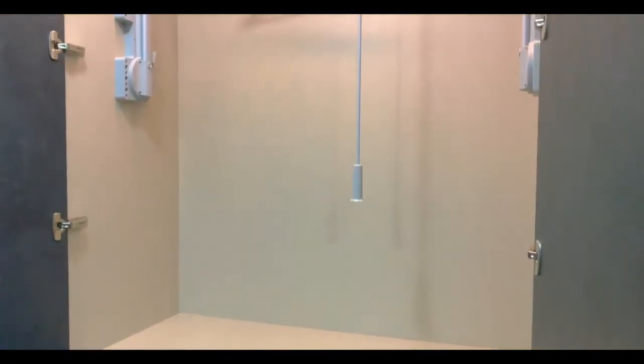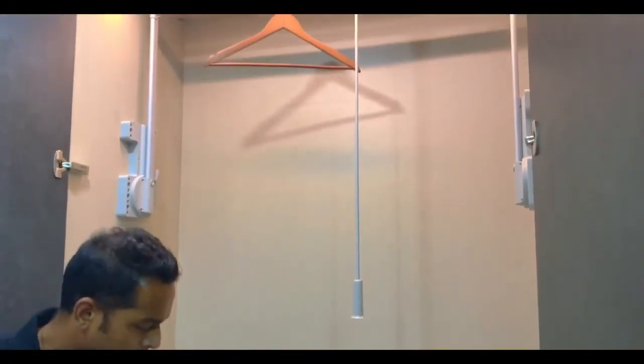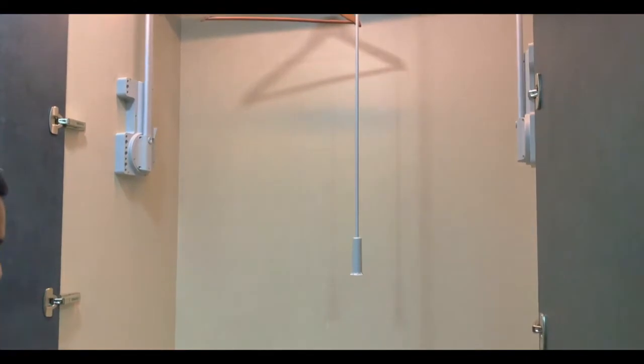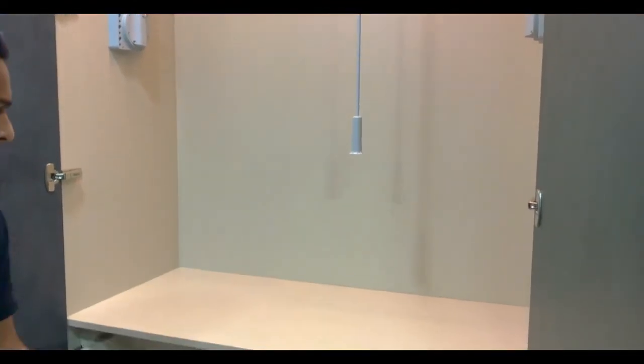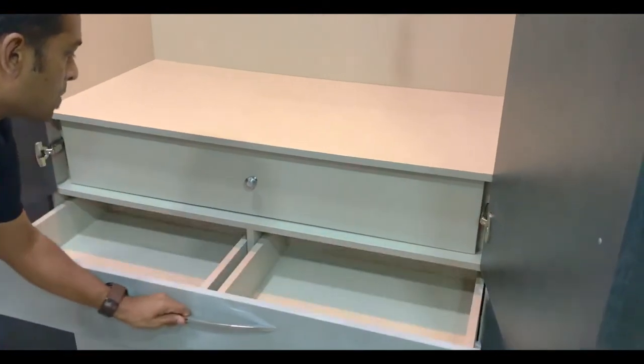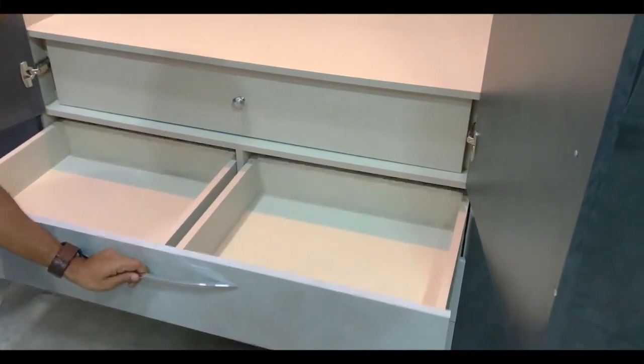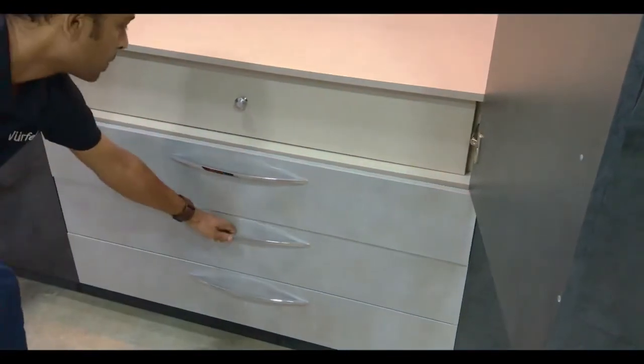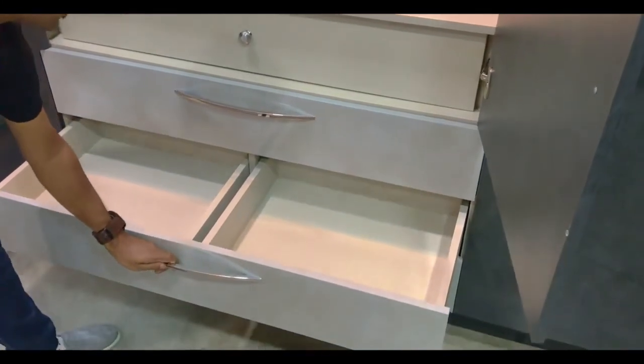In the center section of the hinge wardrobe we have a hanger rod pulldown which helps to access clothes at a height. In the center we have an internal drawer and just below that we have three external drawers which are divided into six compartments.